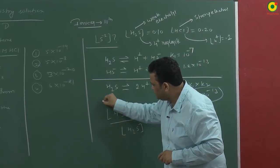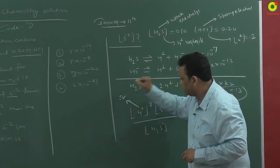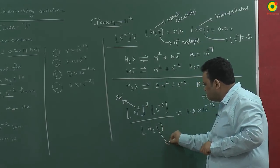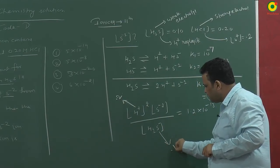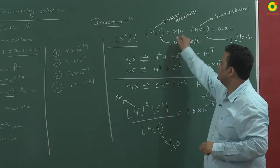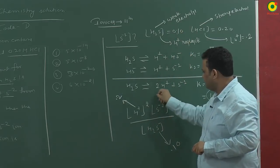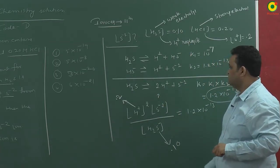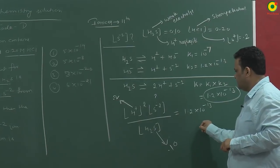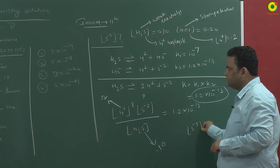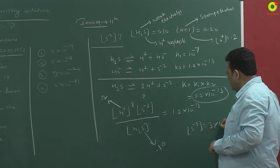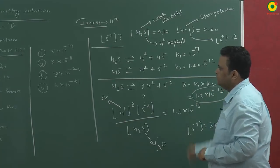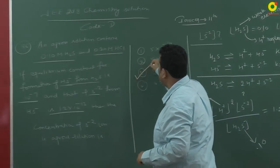I can write H plus concentration as 0.2 while H2S is very less ionized so it is approximately 0.10 as given. We have to find S minus 2. We can solve this and the answer of S minus 2 will be 3 into 10 to the power minus 20. So answer will be third option.